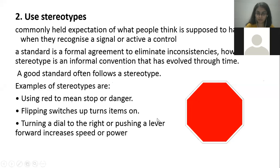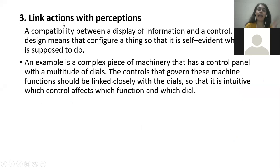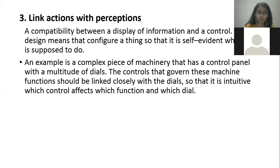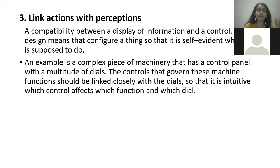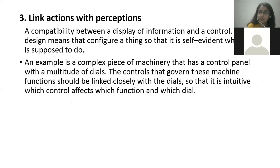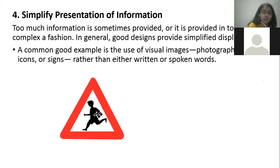The third cognitive principle is to link actions to perception. A control panel should not be designed in a way that doesn't match what it is supposed to do. For example, a switch is only for on and off — you cannot use it to increase or decrease intensity. For increasing or decreasing intensity there is always a revolving dial control. Turning the dial clockwise increases and anti-clockwise decreases — the perception must always match the action of the control.